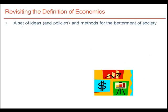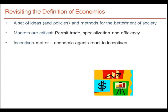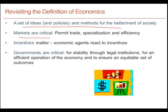At the beginning of Lesson 1, we proposed a definition for economics. We said that it was a set of ideas and policies for the betterment of society, and it also involved a study of methods appropriate for the development of those ideas — a definition given to us by a recent Nobel laureate. If this is our working definition of economics, how can we support the attainment of this goal? Most economists think that markets are critical because they permit trade, they encourage specialization, and therefore result in an efficient operation of the economy.